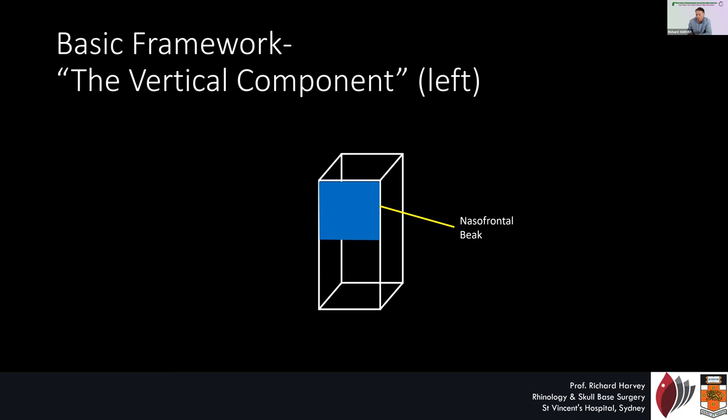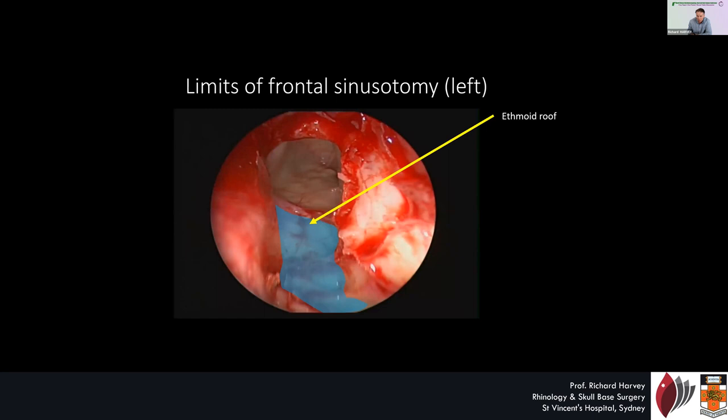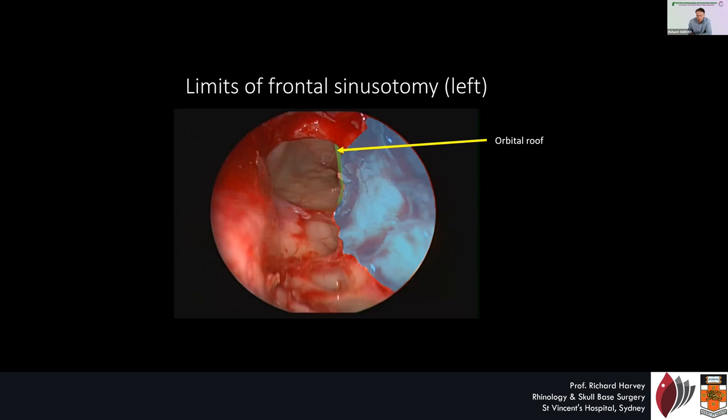If you look endoscopically, this is a frontal sinusotomy in which you can see the boundaries here. The nasofrontal beak is the anterior boundary, the posterior boundary is the ethmoid roof becoming the posterior table, the orbital wall becomes the orbital roof laterally, and then the middle turbinate becomes the intersinus septum medially.